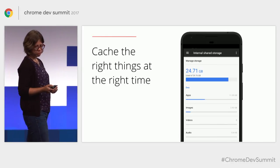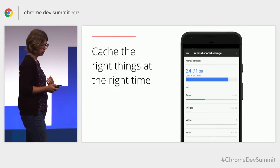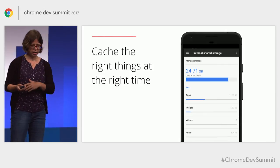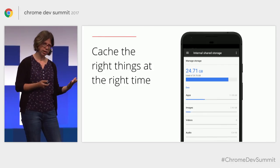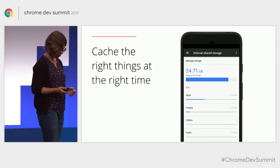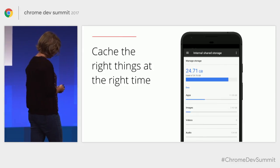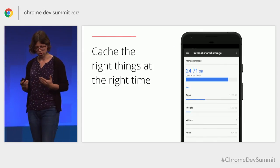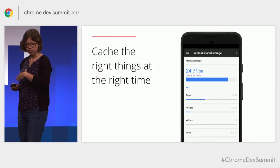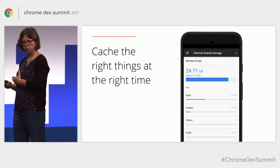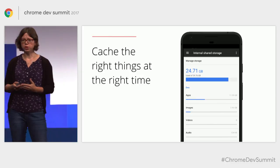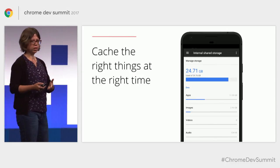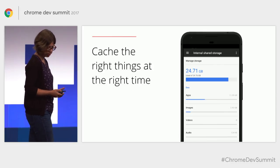Speaking of loading performance, this can of course be optimized a lot with service worker and caching of the resources locally. And this is a primary reason why you should consider service worker, even if you don't expect to get an audience that is fully offline. Saving some resources in the cache can make your site perform much better and be much more reliable, even if the users don't go offline fully for extended periods of time.